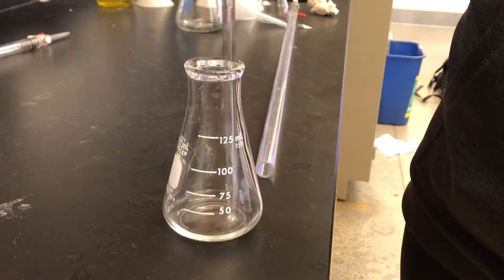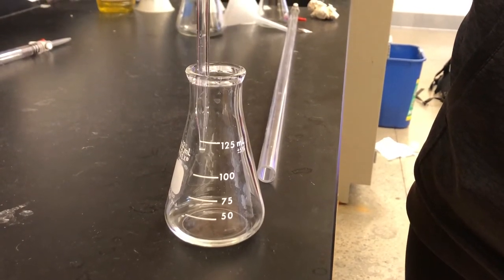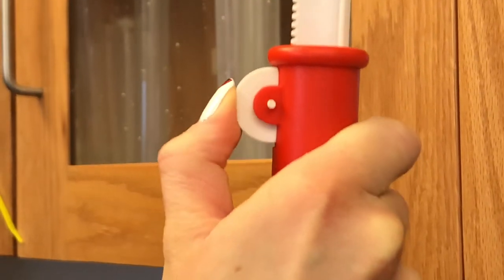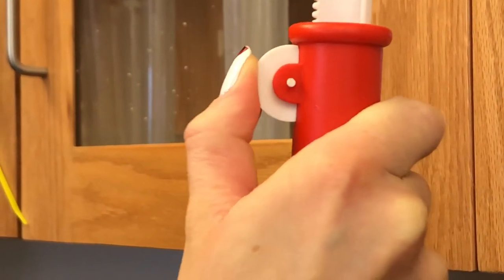As you squirt the acid into the flask, make sure there is no liquid left at the bottom of the pipette. Scroll up and down on the spin wheel to make sure that all the liquid comes out.